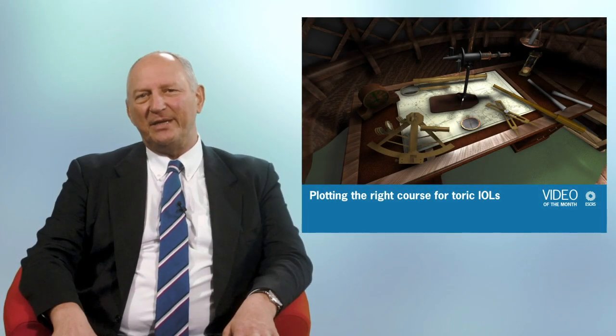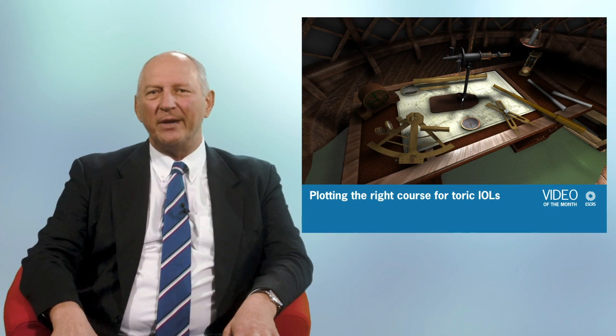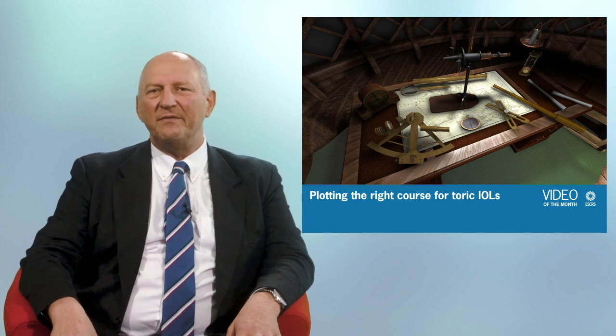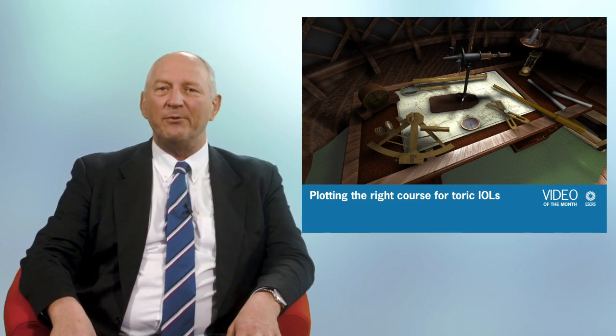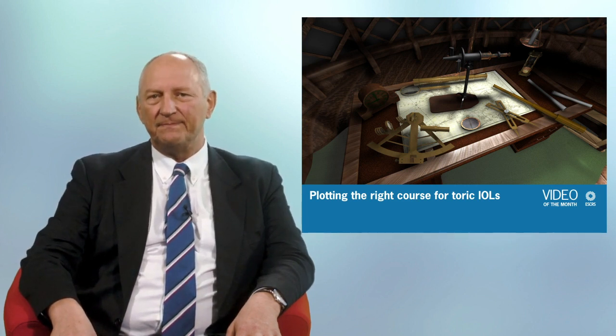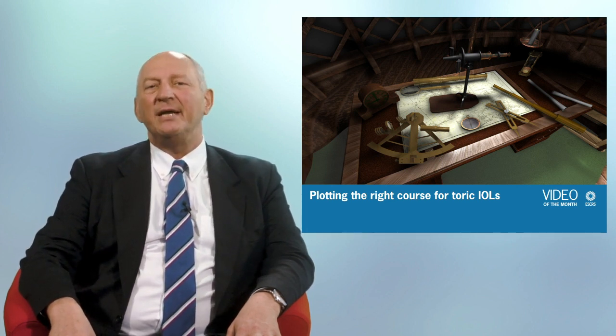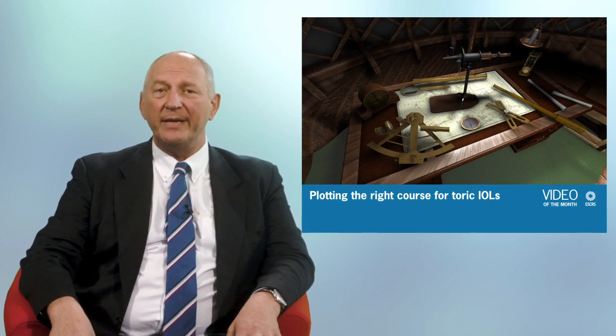In this typically richly illustrated video, he draws some analogies between nautical navigation and toric IOL calculation, which I personally didn't find too convincing, but you decide for yourself. The principal issue that he's addressing here is to identify the most appropriate statistical method for combining K readings from multiple measuring devices in order to give the most predictable and accurate correction of corneal astigmatism. To achieve this, he undertook a retrospective analysis of the one-month outcomes in 128 patients with toric lens implants.